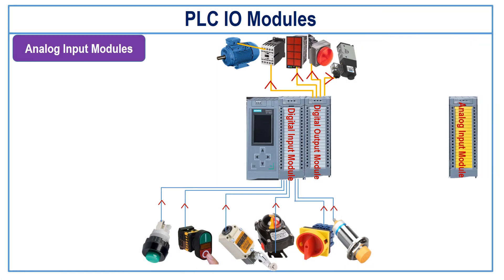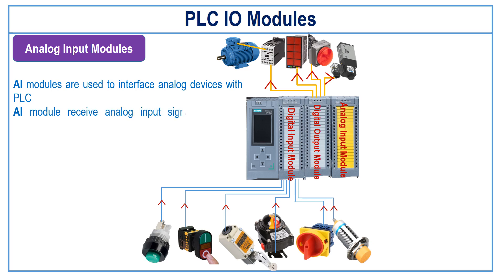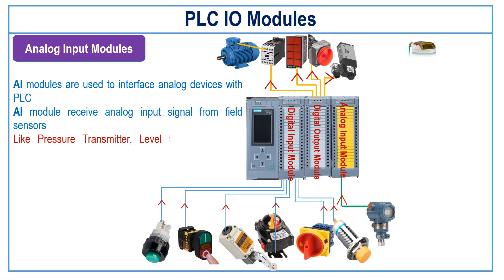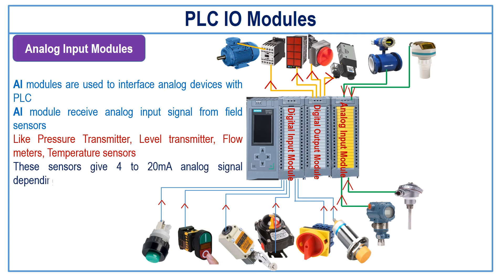Analog input modules: The analog input modules are used to interface the analog devices with the PLC. Analog input modules receive the analog input signal from field sensors like pressure transmitter, level transmitter, flow meter, or temperature transmitter. These devices give a 4 to 20 mA or 0 to 5 V analog signal depending on the process value.